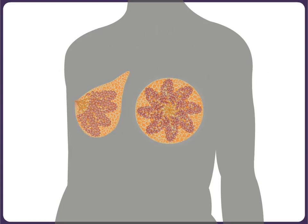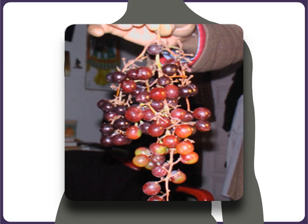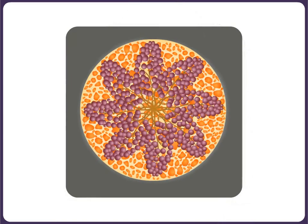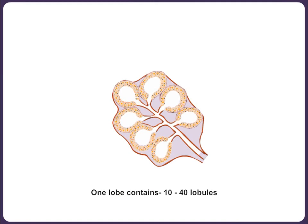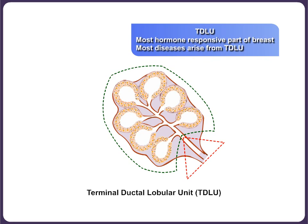We shall explain this concept through some anatomical facts. There are seven to eight lobes in each breast, arranged like a bunch of grapes — each grape representing the milk gland or acinus, and the stalk representing the major milk duct opening at the nipple. Each lobe contains 10 to 40 lobules, which in turn are composed of 10 to 100 acinae. These acinae are the basic secretory unit of the breast. The terminal ducts together with the lobules constitute the terminal ductal lobular unit, known by the acronym TDLU. The TDLU is the most hormone-responsive and most active part of the mammary gland.